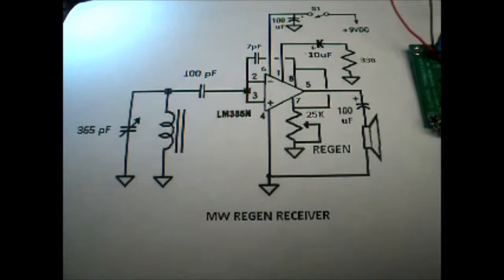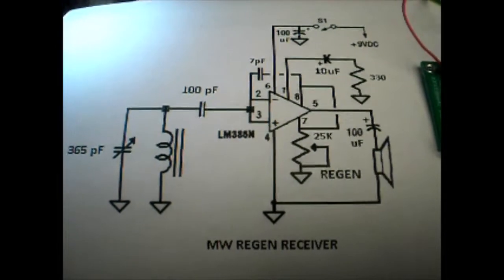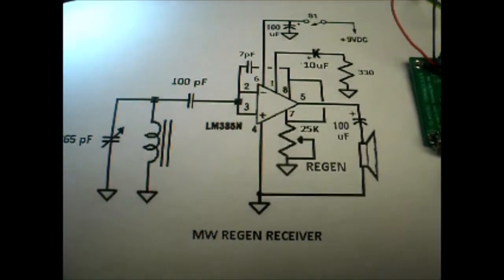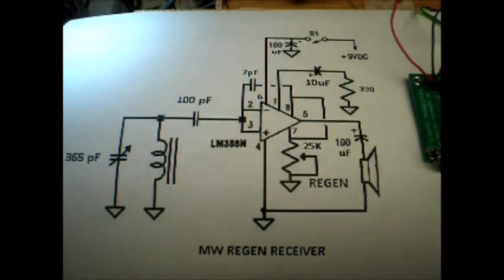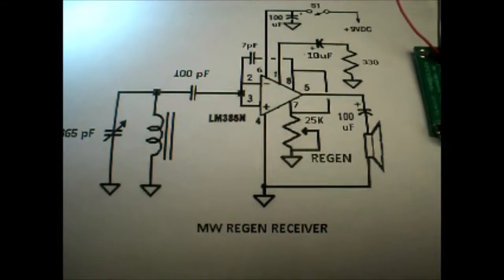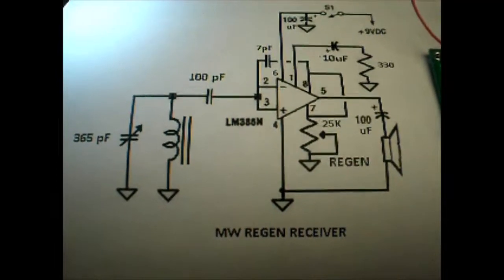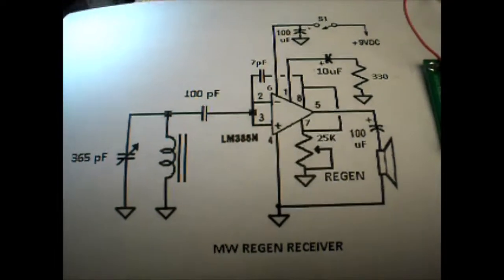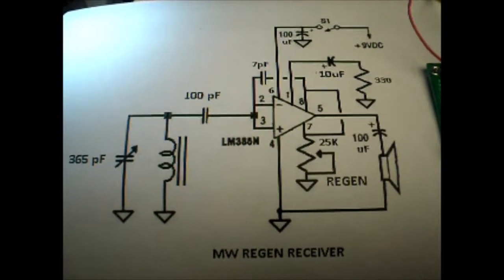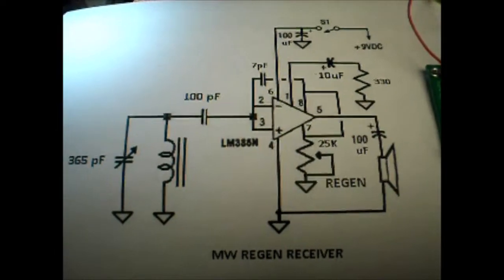Just a real quick video to illustrate this medium wave regen receiver built from just an LM386 audio amplifier. I found the circuit and actually several versions of it as people were trying different things. This is the one I settled on and it's pretty simple.